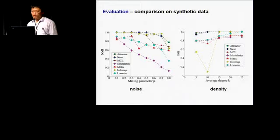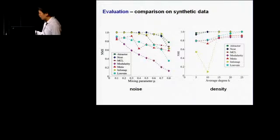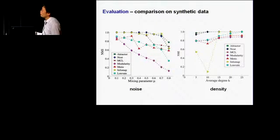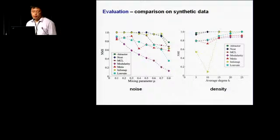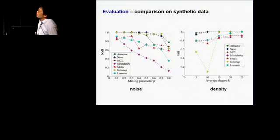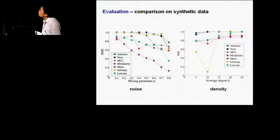We first evaluate our algorithm on synthetic datasets. We have two types: one adds noise to graphs, and the other consists of communities with different sizes. We compare our algorithm with many state-of-the-art algorithms, including NCUTS, MCAO, modularity, METIS, InfoMap, and Louvain. We find that our algorithm is comparable to or outperforms many other algorithms on these two synthetic datasets.